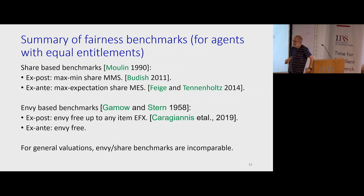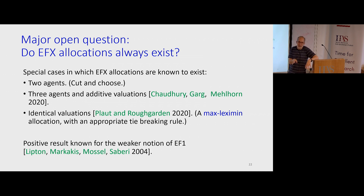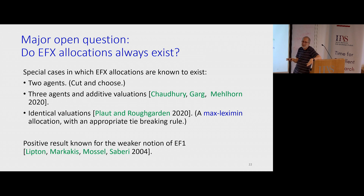If we're looking at envy-based fairness notions, agents might not want to do Pareto improvements because this may create envy. Some people do take envy very seriously. The speaker notes that when his granddaughters visited, there were three girls and only two pink plates, and the only solution everyone accepted was that nobody gets a pink plate — two getting it and one not was not accepted. For some people, envy is very important.